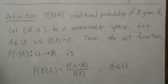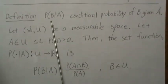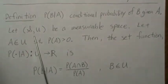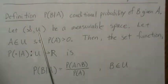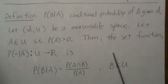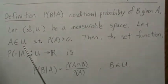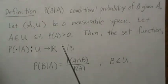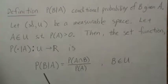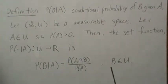The definition: we're going to call this the probability of B given A — it's called the conditional probability of B given A. We let the tuple (S, U) — the sample space and the sigma field associated with it — be a measurable space, and we let the event A be in the sigma field such that the probability of A is greater than zero. Then the set function from the sigma field to the real number line is defined as: the probability of B given A equals the probability of A intersect B divided by the probability of A, for every B in the sigma field.